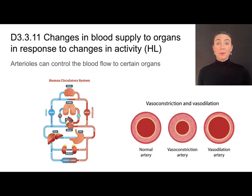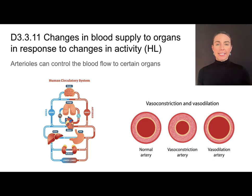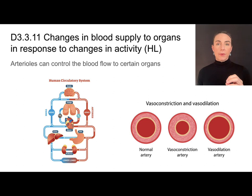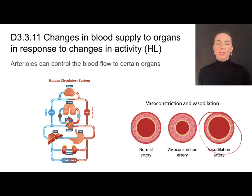In order for the kidneys to filter the blood, blood flow needs to be directed to the kidneys. Our bodies can actually increase or decrease blood flow to different organs at different times based on different needs. Arterioles are smaller arteries that branch off arteries and can control blood flow to organs through vasoconstriction and vasodilation. To reduce blood flow to an organ you would experience vasoconstriction; to increase blood flow you would undergo vasodilation.